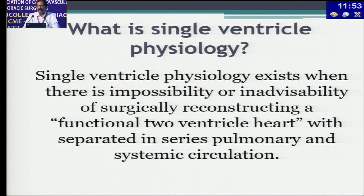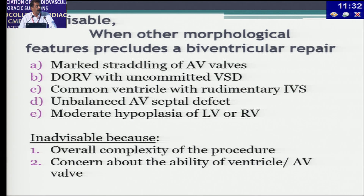What is single ventricle physiology? Single ventricle physiology exists when there is impossibility or inadvisability of surgically reconstructing a functional two-ventricle heart with separated, in-series pulmonary and systemic circulation. It is inadvisable when other morphological features preclude a biventricular repair — marked straddling of the AV valves, DORV with uncommitted VSD, or common ventricle with rudimentary PA.